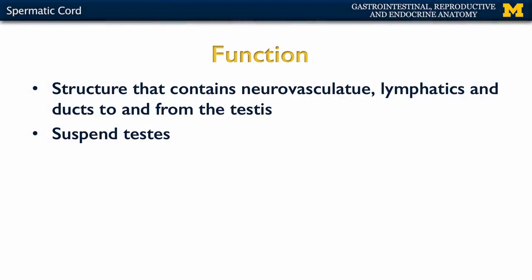Let's discuss the spermatic cord. It's associated with the internal portion starting at the deep inguinal ring, and also located in the external portion of the male reproductive system, the scrotum. Its function is to suspend the testes and help in the descent of the testes from the abdomen into the scrotum. It's a collection of neurovasculature, lymphatics, and ducts to and from the testes associated with blood supply, innervation, or allowing sperm to exit through the testes back through the internal portion to the urethra.